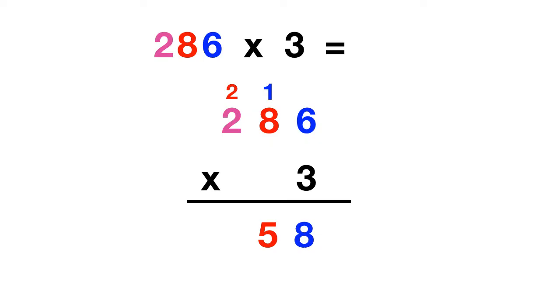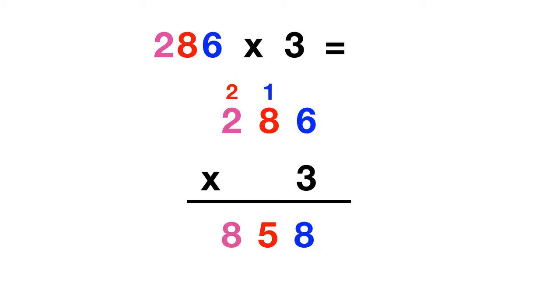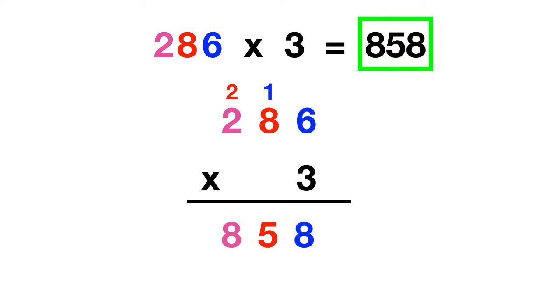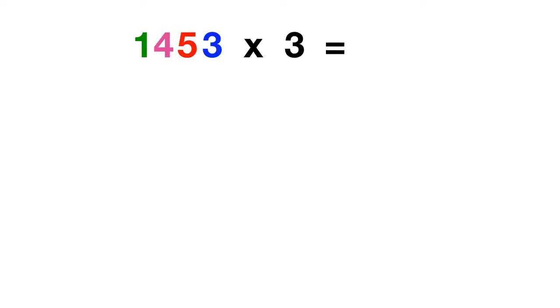Next you multiply 3 times these 200s. 3 times 2 is 6, but you must remember to add in these 200s. So 6 plus 2 is 8. 286 times 3 is 858. Let's look at one more where we'll figure out what 1453 times 3 equals.